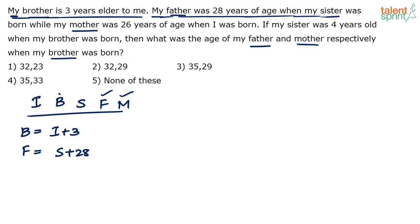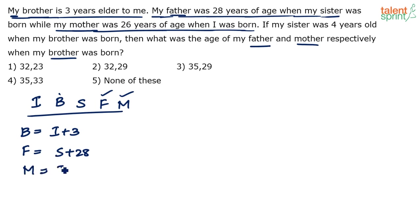My mother was 26 years of age when I was born, so mother's age is 26 years more than my age: m = i + 26. When I was zero, mother was 26. When I am two years old, my mother will be 28 years old — always 26 years older than me.